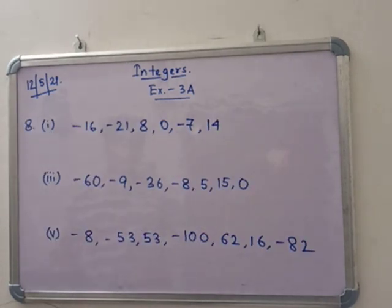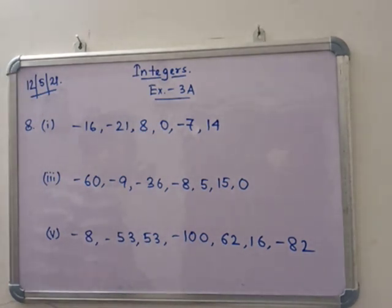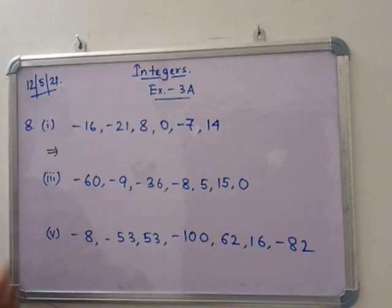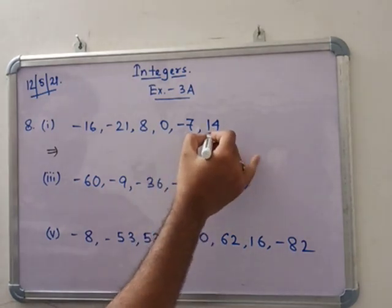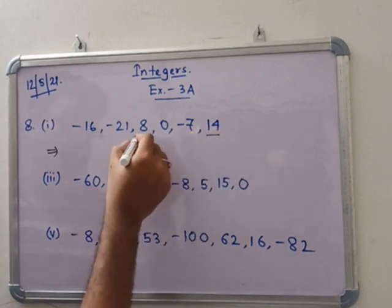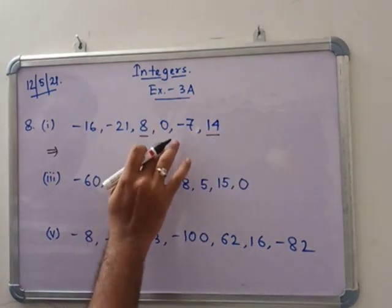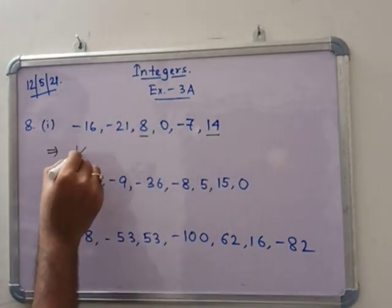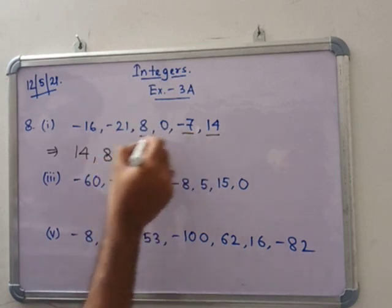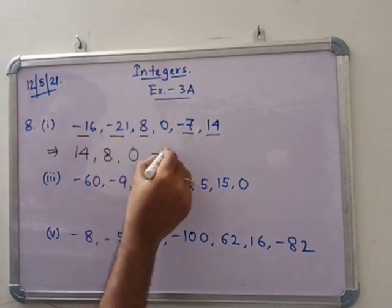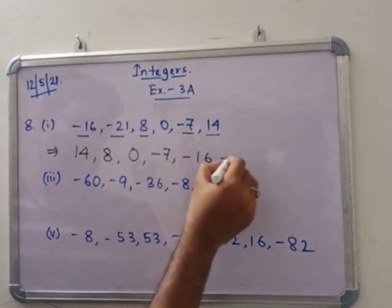In number 8.1, see that descending order — you have to write the following integers in descending order. That means big to small. On the number line you write from the right-hand side to the left-hand side. Check the positive numbers first because you write the bigger numbers first. So 14 and 8 — write 14, then 8, then 0, then minus 7, minus 16, minus 21.